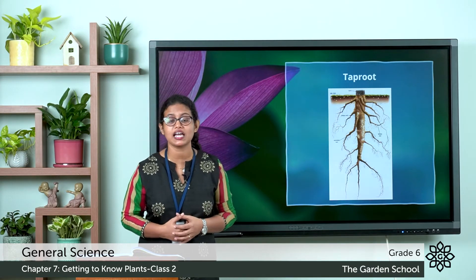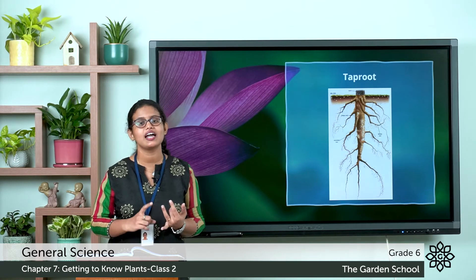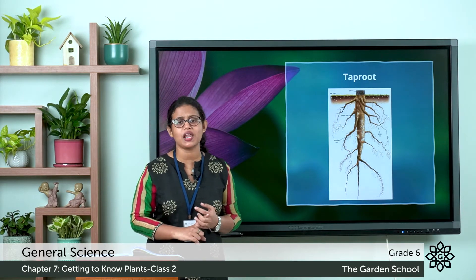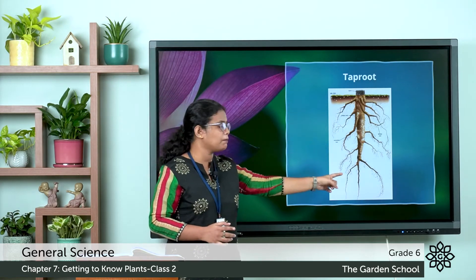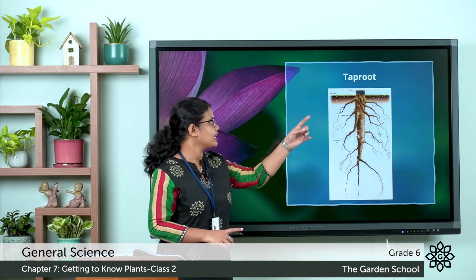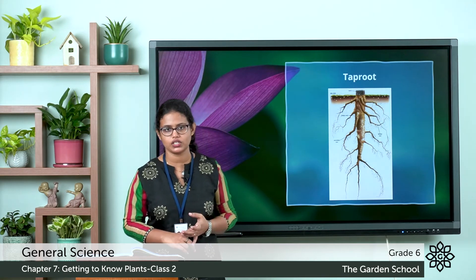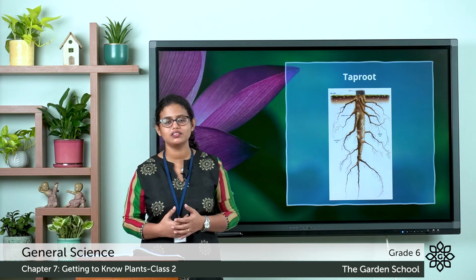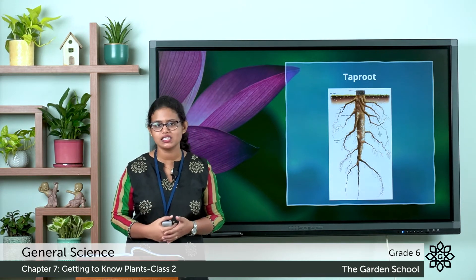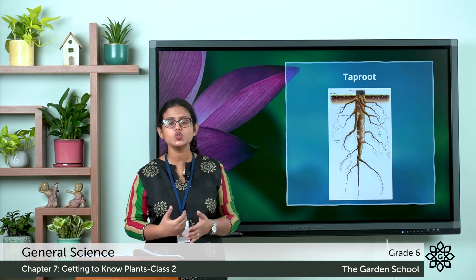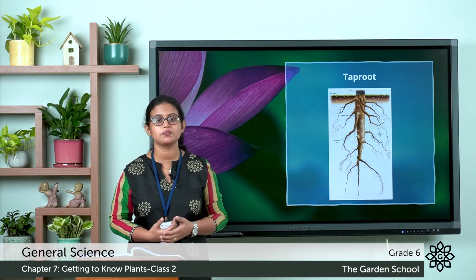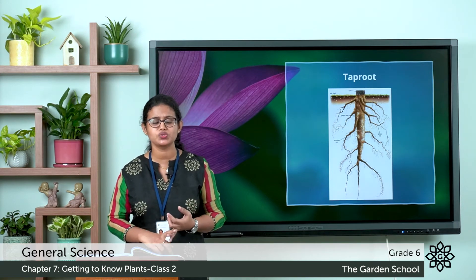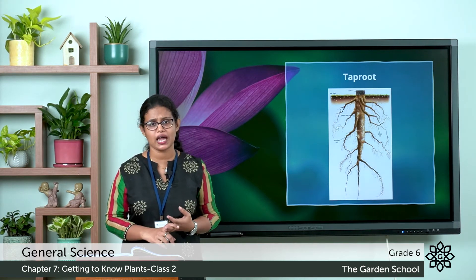Which plants have this taproot? Plants such as carrot, beetroot, and radish — all these plants have taproot, with a thick main root and several thin roots attached to it. Plants that bear seeds with two cotyledons, which we call dicots, that is dicotyledonous plants, have taproot. For example, carrot, beetroot, and radish all have taproot.